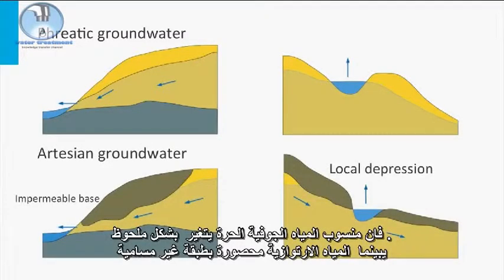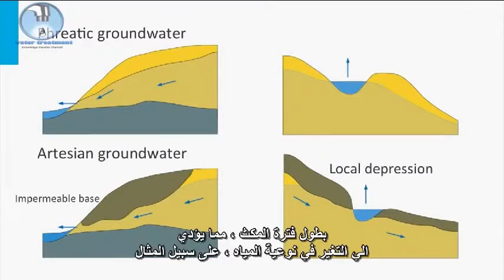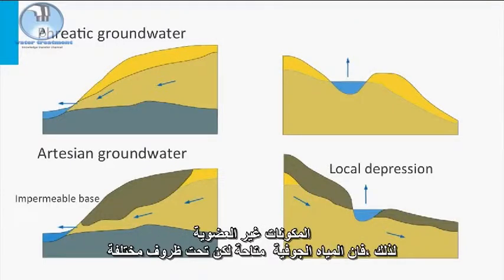Artesian water is confined by an impermeable layer, resulting in the build-up of hydraulic pressure. This groundwater is also characterized by long residence times in the aquifer, resulting in changes in water quality — for example, improvement of microbial reliability, but also deterioration of quality by the dissolution of inorganic constituents.